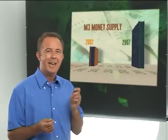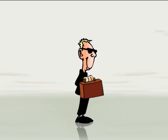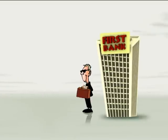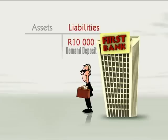Banks can actually create money. This is Mr Smith. Let's say Mr Smith goes to his bank, the First Bank, and deposits 10,000 Rand. First Bank creates a demand deposit in Mr Smith's name. This is a liability in the bank's financial accounts — it owes this money to Mr Smith, and the bank must allow him to withdraw it whenever he wants.